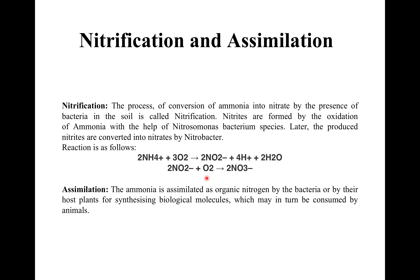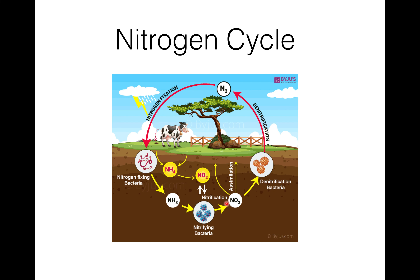The third step is assimilation. Ammonia is assimilated as organic nitrogen by bacteria or by their host plants for synthesizing biochemical molecules, which may in turn be consumed by animals. Plants obtain nitrogen from the soil by absorbing nitrate ions or ammonium ions through their roots, and these organic nitrogen compounds are then obtained by animals when they consume plants or other animals.